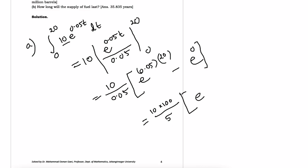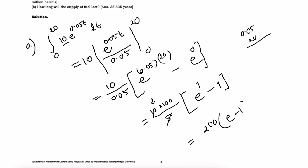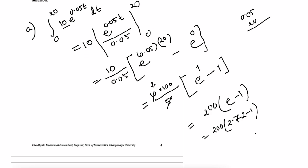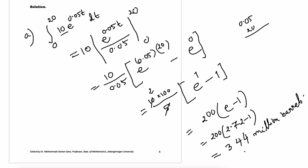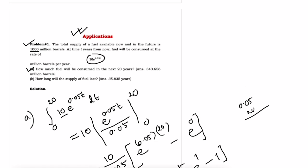e to the power 0.05 times 20, and e to the power 0 equals 1. This equals 10 into 100 divided by 5 — you can use your calculator. e to the power 0.05 times 20 minus 1, or approximately 2.72 minus 1, gives 200 times that value, which equals 344. So the answer is 344 million barrels.